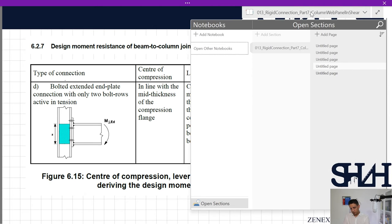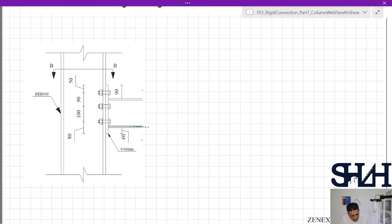Lever arm z may be taken conservatively as the distance from the center of compression to a point midway between these two bolt rows. We need to find the distance from the center of compressive flange to the midway between the first two bolt rows. This line represents the center of the bottom flange as the center of compression, and here will be the midway between these two bolts. The height of the beam is 190 and we have 40 millimeters here, so up to this center it will be 230 millimeters. From 230 millimeters we reduce 5 millimeters for beam flange thickness and 45 millimeters down to the midway of two bolt rows, so it will be 180 millimeters taken as z.